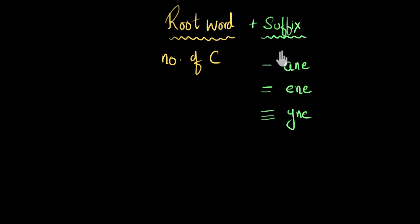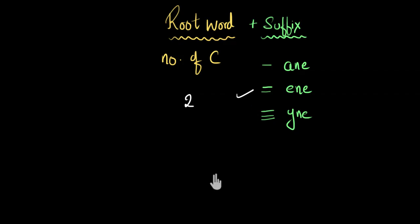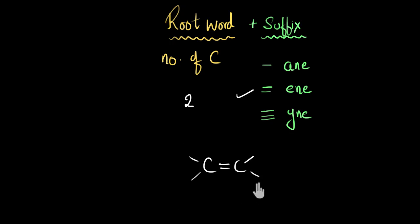For example, if I'm thinking of a hydrocarbon which has two carbon atoms and one double bond between them, with just these two pieces of information you can guess which hydrocarbon it is. You write two carbons with a double bond between them, and the remaining valences are satisfied by hydrogen — that's why it's a hydrocarbon. So these are the two pieces of information needed to name a hydrocarbon.